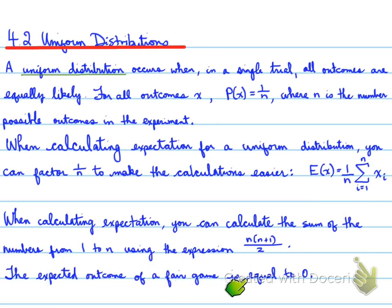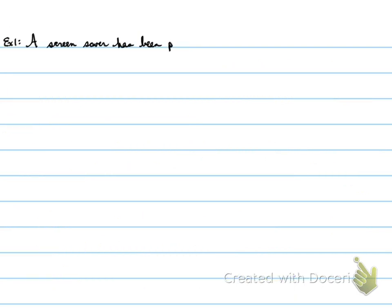The expected outcome of a fair game is always equal to 0. Next, let's look at an example.